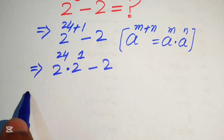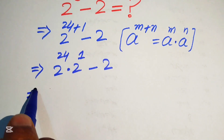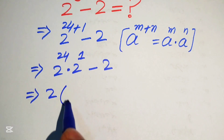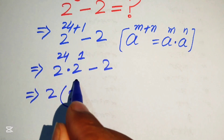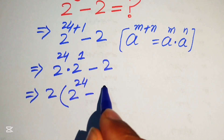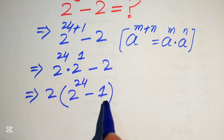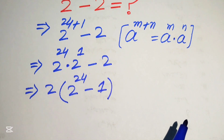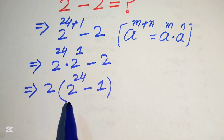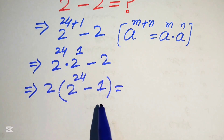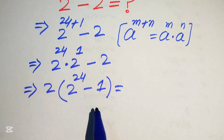Now we can see that 2 is the common term, so we take 2 common, and the remaining terms are 2 to the power of 24 minus 1.